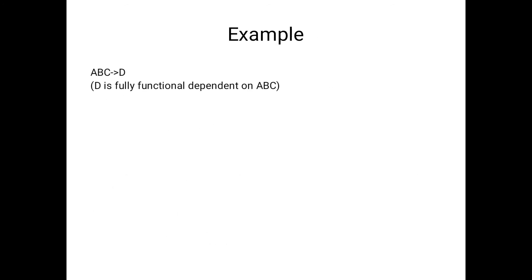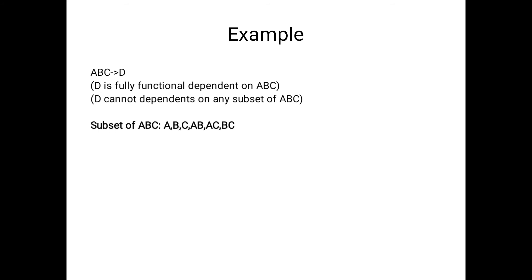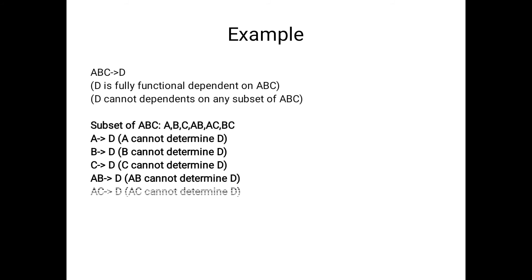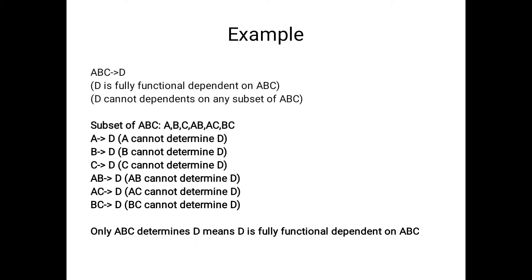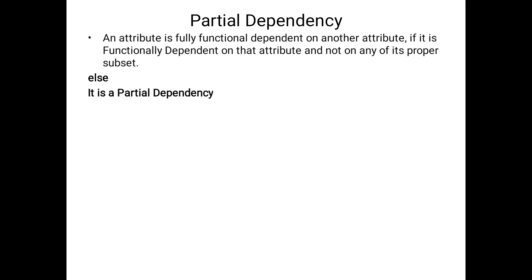For example: ABC implies D. We say D is fully functional dependent on ABC if and only if D does not depend on any proper subset of ABC. The proper subsets of ABC are: A, B, C, AB, AC, BC. None of these can determine D. Only then do we say ABC implies D is a fully functional dependency — otherwise it is partial dependency.